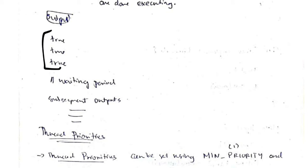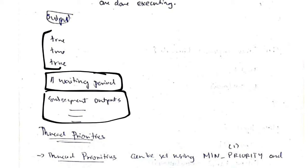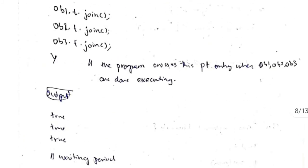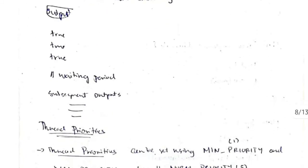The output will show true three times, then a waiting period, and then any subsequent output written after the join calls will appear after the waiting period ends.